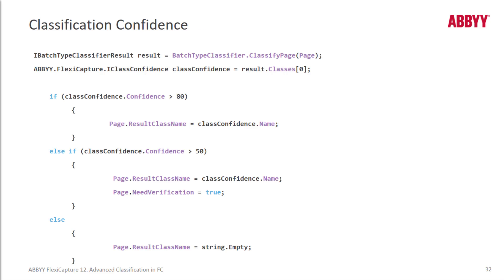This is an example of a script using classification confidence. This script checks classification confidence and decides if verification is required based on a threshold.